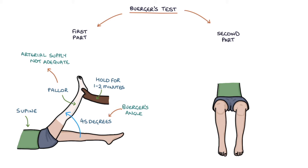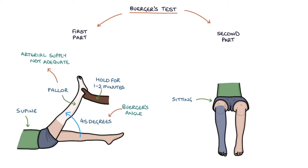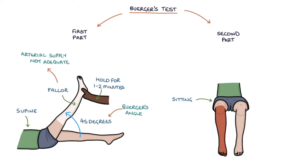The second part of the test involves sitting the patient with their legs hanging over the side of the bed. Blood will flow back into the legs, assisted by gravity. In a healthy patient, the legs will remain a normal pink colour. In a patient with peripheral arterial disease, they will go blue initially as the ischemic tissue deoxygenates the blood, and then a dark red after a short time due to vasodilation in response to the waste products of anaerobic respiration. This dark red colour is referred to as rubor.